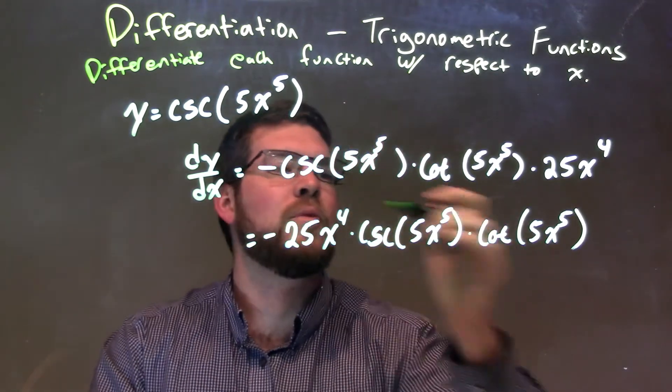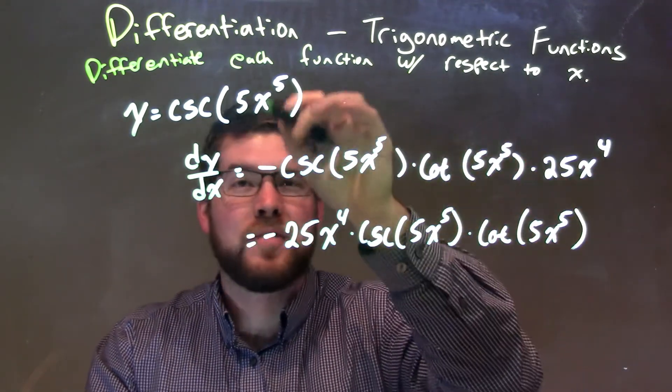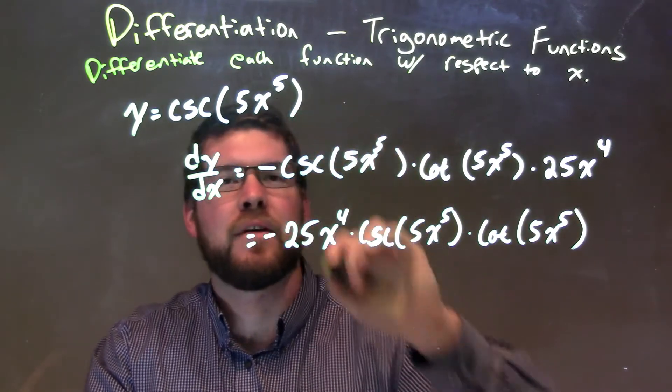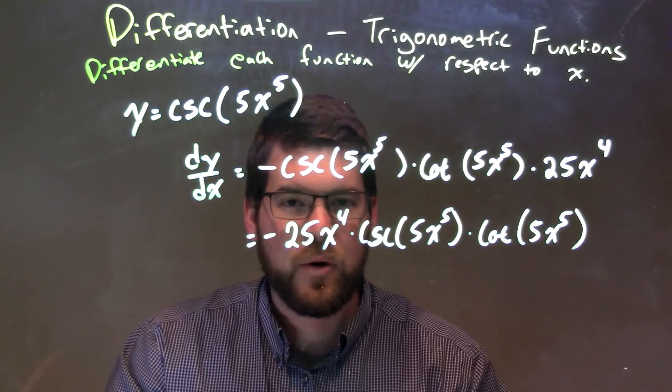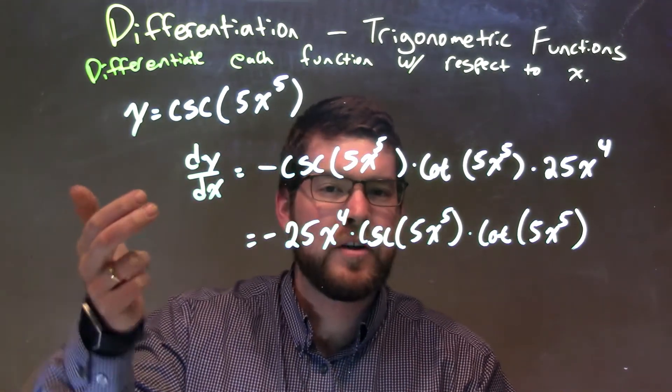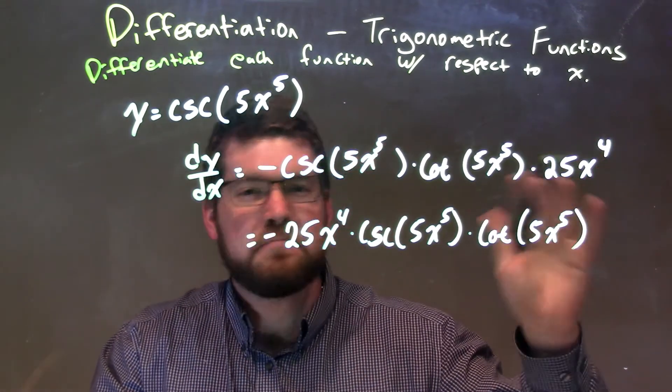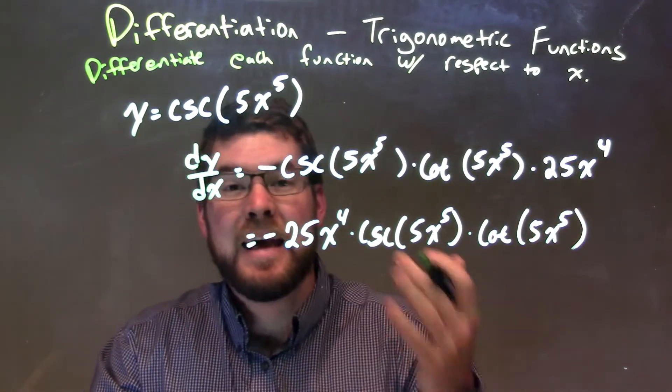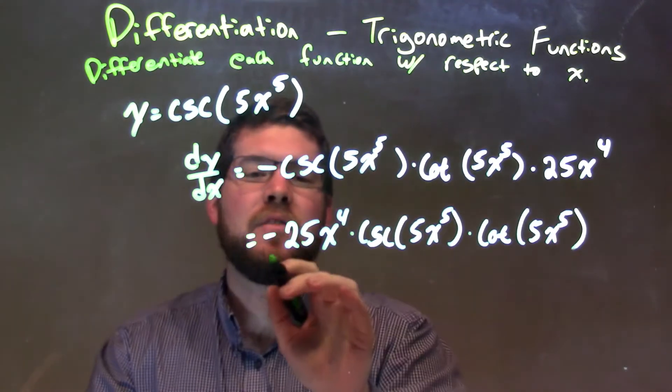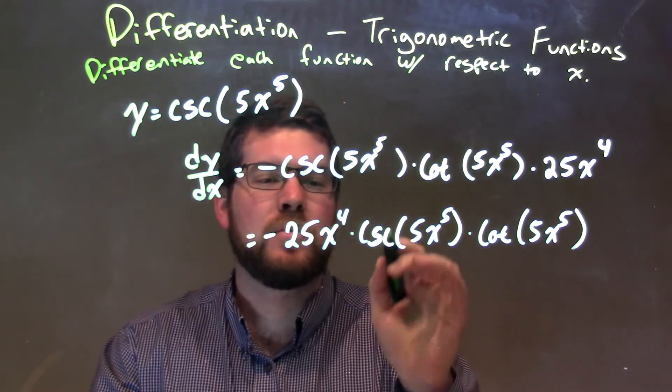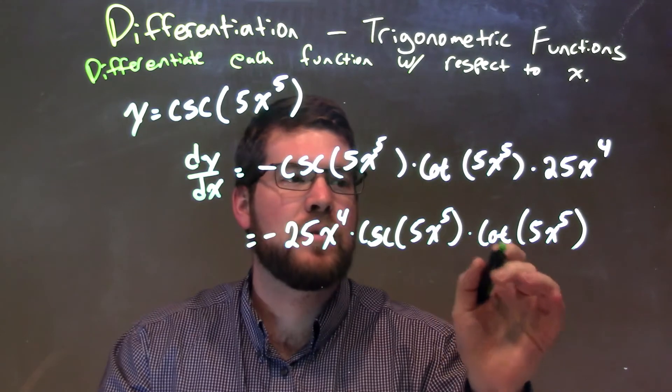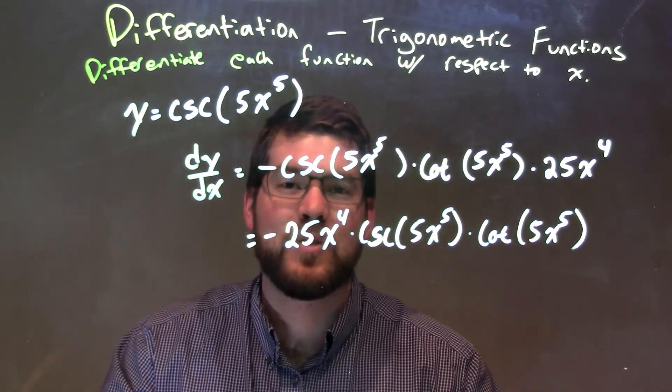Then on the chain rule, we take a derivative of what is inside of that parenthesis, and derivative of 5x to the 5th is 25x to the 4th. At this point, we've taken the derivative, but we're going to rearrange it to make it look a little nicer with 25x to the 4th out front. And then we have our final answer of negative 25x to the 4th times the cosecant of 5x to the 5th times the cotangent of 5x to the 5th.